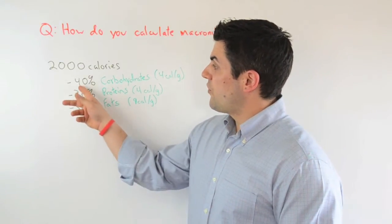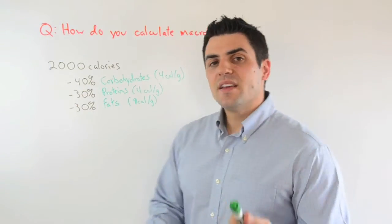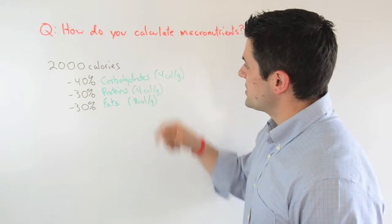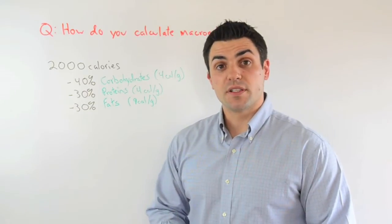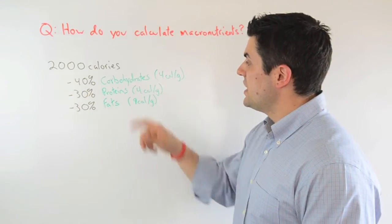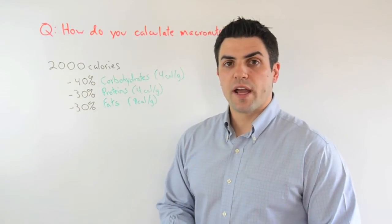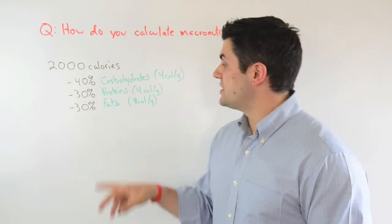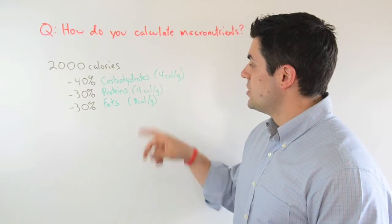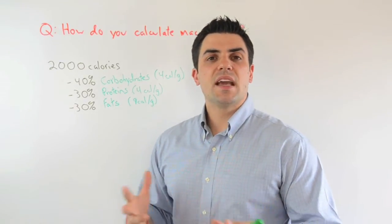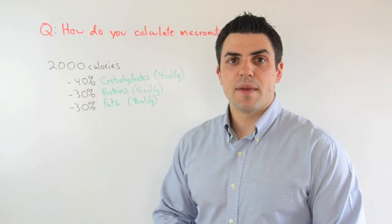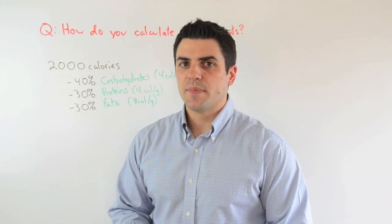So if we're going to do 40% calories from carbohydrates, the other piece of information that we need to know is that one gram of carbohydrates contains four calories. For proteins, it's also four calories per gram. And then fats, which are the most calorie dense, there are nine calories per gram. Because in the end, the numbers that we want are going to be how many grams of each of these macronutrients are we going to be shooting for each day.